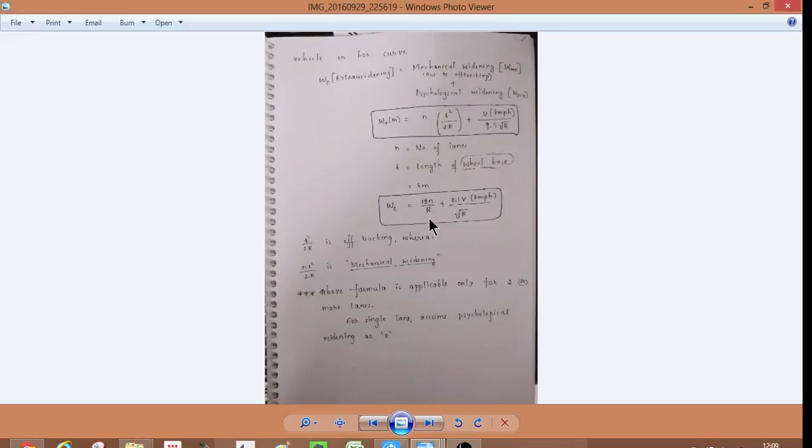Can you have extra widening? This is also very important. It is L squared N by R plus 0.1 V by root R. So, this is very, very important. It is L squared N by R plus 0.1 V by root R. So, in this case, V is in KMH. So, L is the length of wheelbase, N is number of lanes. And then, R is the radius. V is the design speed.